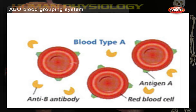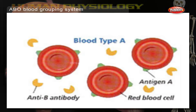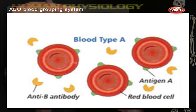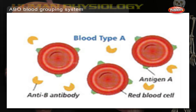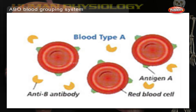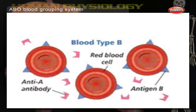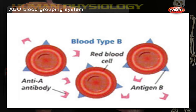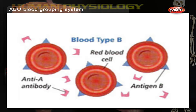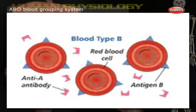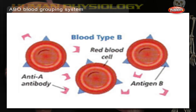If you belong to blood group A, you have A antigens on the surface of your red blood cells and B antibodies in your blood plasma. If you belong to blood group B, you have B antigens on the surface of your red blood cells and A antibodies in your blood plasma.